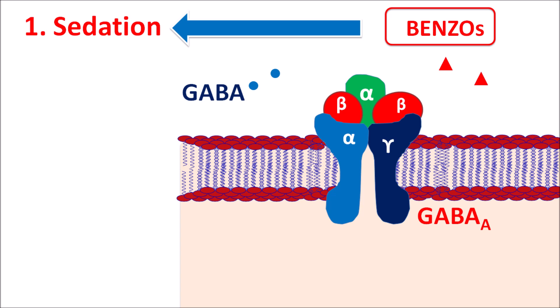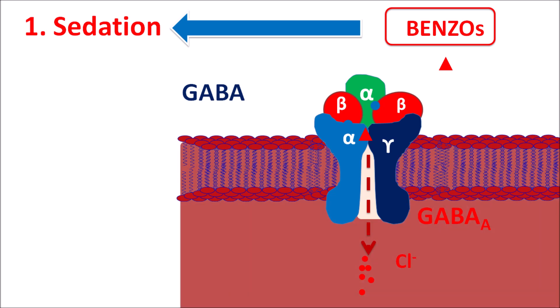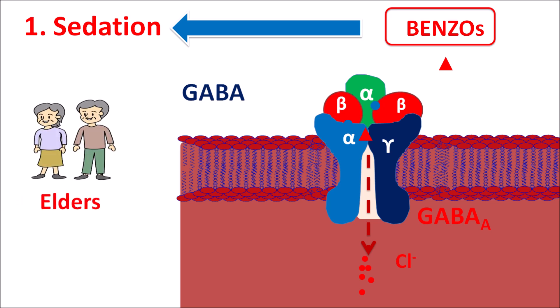Benzodiazepines bind to an accessory site on GABA-A receptors, facilitating the binding of GABA. By this binding, chloride channels are opened, resulting in hyperpolarization and inhibition of the CNS. In this way, benzodiazepines inhibit neurotransmission, thereby increasing sedation. This sedation is more pronounced in the elderly, where it may impair daytime activities, and is particularly observed at high doses of benzodiazepines.